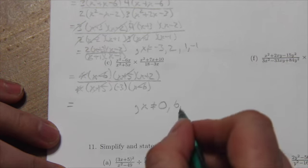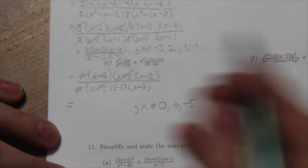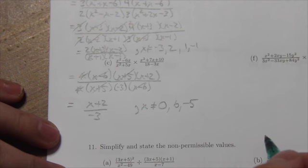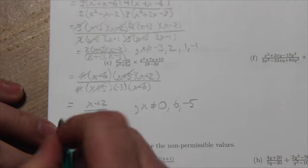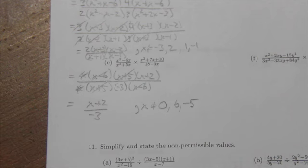x plus 5 divided by x plus 5 will be 1 so long as x is not allowed to be negative 5. And then I'm basically left with just x plus 2 over negative 3 with these restrictions here. There's no other restrictions because there's no other x in the denominator.